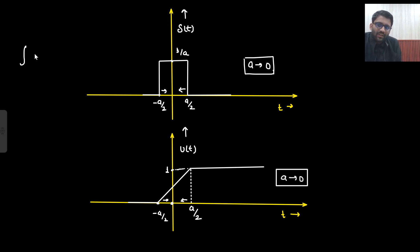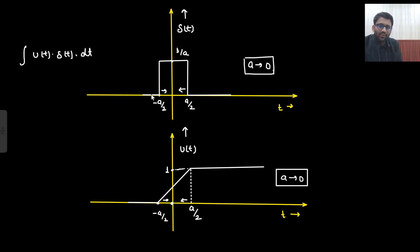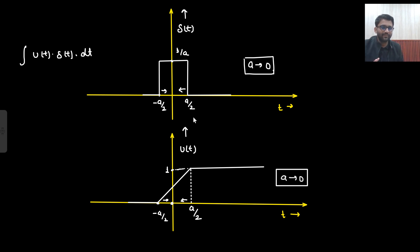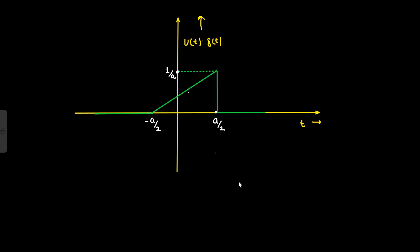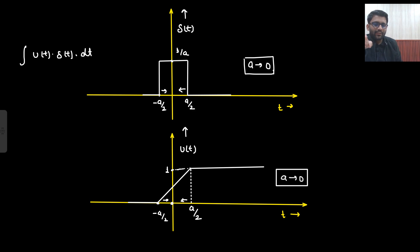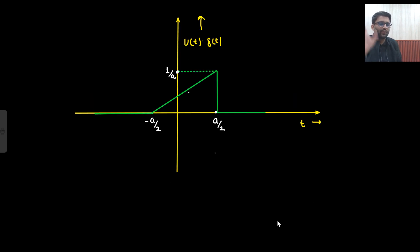Now we need to solve the integral with a given limit: u(t)·δ(t)·dt. We need to multiply both functions. The impulse is from minus A/2 to A/2, and the step ramp is also from minus A/2 to A/2. After A/2 to infinity the value is 0, so 0×1=0 and 0×0=0. From minus A/2 to A/2, multiplying gives a ramp with maximum amplitude 1/A. This is what you are going to get.